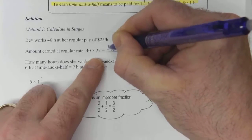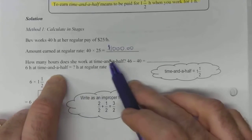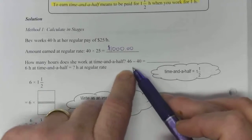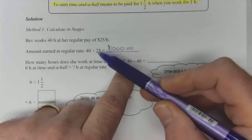So she makes $1,000 for her first 40 hours. How many hours does she work at time and a half? Well, she worked 46 in total, and for the first 40, she makes $25 an hour.